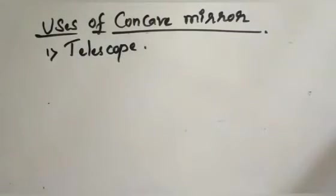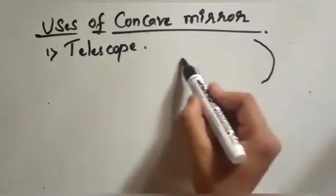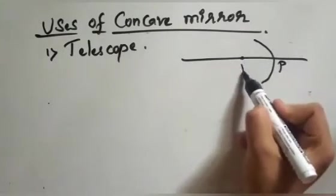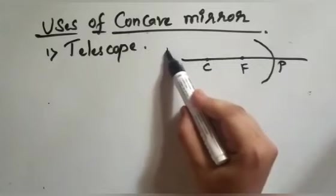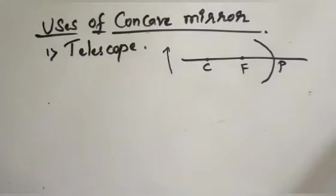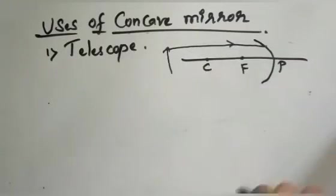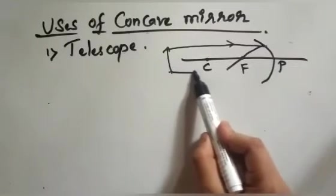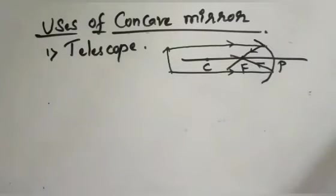I'll explain how the concave mirror is used in the telescope. When a ray of light parallel to the principal axis falls on a concave mirror, after reflection it passes through the principal focus. All rays of light parallel to the principal axis, after reflection, will meet at a single point called the principal focus.